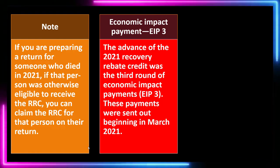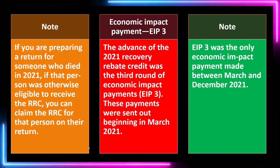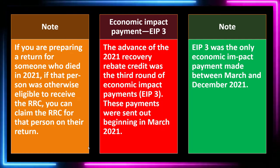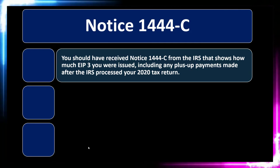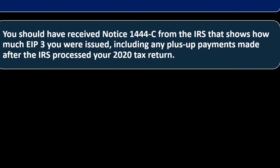The advance of the 2021 recovery rebate credit was the third round of economic impact payments, otherwise known as the EIP3. These payments were sent out beginning in March 2021. EIP3 was the only economic impact payment made between March and December 2021. You should have received a Notice 1444-C from the IRS showing how much EIP3 you were issued, including any plus-up payments made after the IRS processed your 2020 tax return.